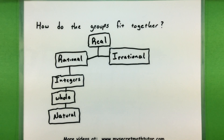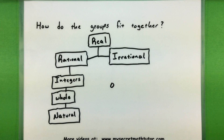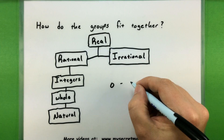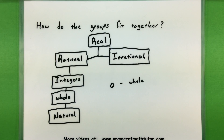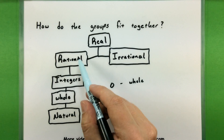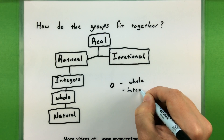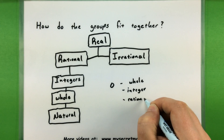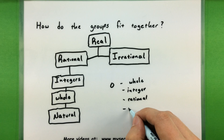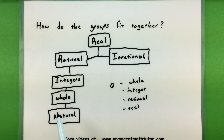Let's take a number like 0. Zero is one of our whole numbers, so we could say yes, that's definitely in the whole number group. But it's also in the groups connected above it — so yes, it is also an integer, it's also rational, and it is a real number. You can see we're really just connecting the ones above it.